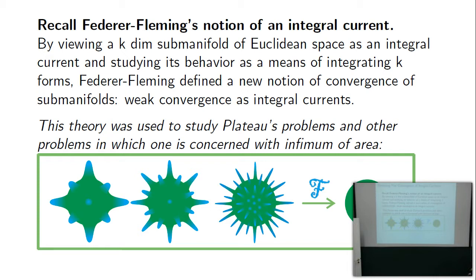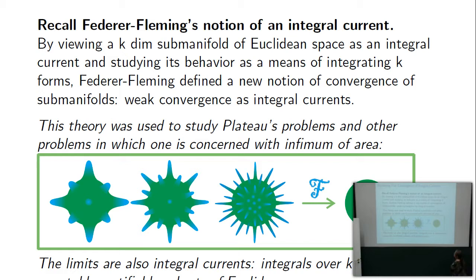They proved that limits are actually integral currents — a countable collection of bi-Lipschitz charts into Euclidean space with an orientation on the charts and an integer-valued weight (that's what 'integral' means). They also studied rectifiable currents where weights are not integer-valued. With the assumption that the sequence lives in a compact set in Euclidean space and there is a uniform bound on volume, a subsequence converges to these kinds of sets, over which integration of differential forms is well-defined via bi-Lipschitz charts.